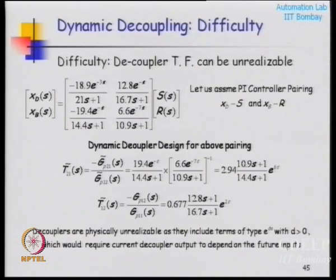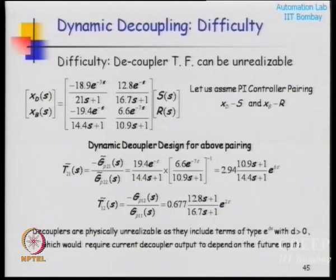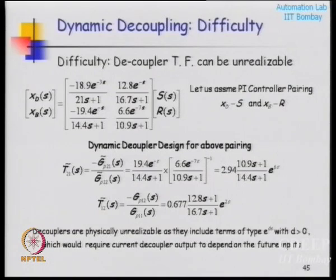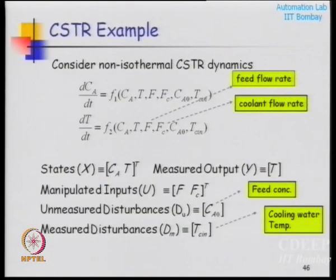Decoupling can be used for small systems - two-input two-output or maybe three-input three-output - but it has limited power because the model has to be perfect. The main advantage is that you do not need any special software; you can implement decoupling ideas through a normal DCS or PLC hardware off the shelf. But beyond small dimensional systems, this does not help us.